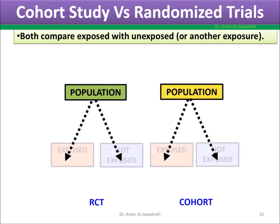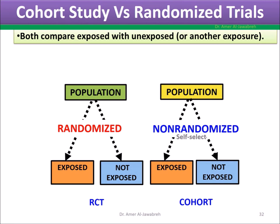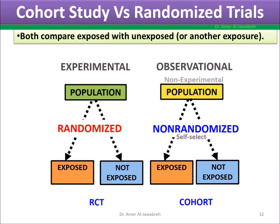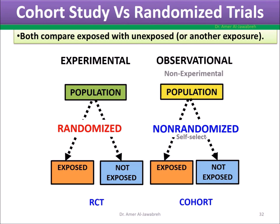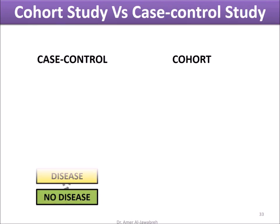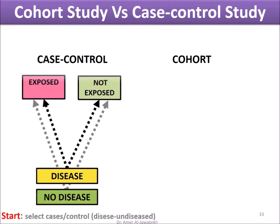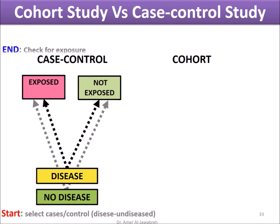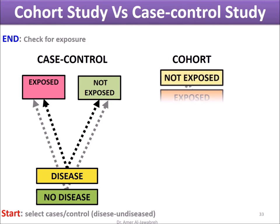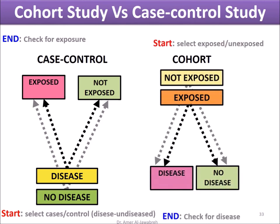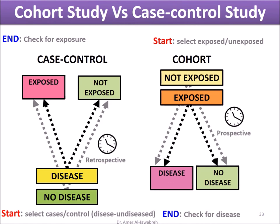Cohort study versus randomized trial: both compare exposed with unexposed. RCT is randomized while cohort is non-randomized. RCT is experimental while cohort is observational. Cohort study versus case control study: case control selects cases and controls, then checks for exposure in both; while cohort selects exposure, then looks for the development of disease. Case control is retrospective in time, while cohort is prospective in time.